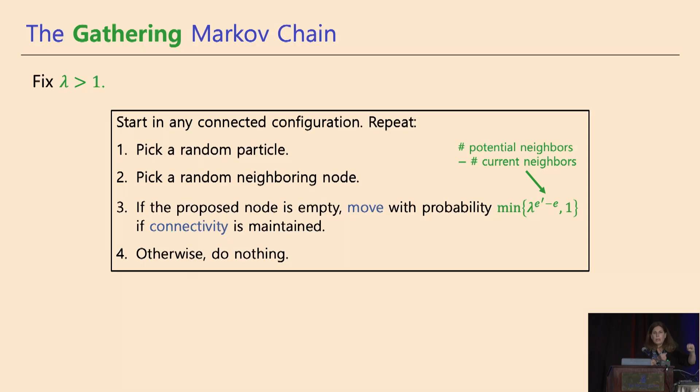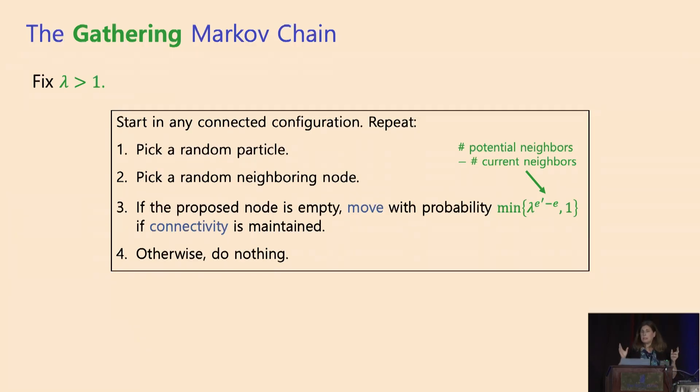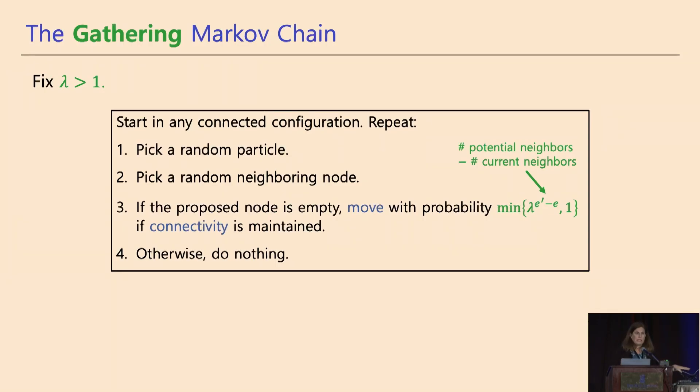It goes there with probability which is determined by some parameter lambda. So it goes there with probability lambda raised to the number of neighbors the ant would have in the new place minus the old place. Very simple, and it stays connected. So if it was going to disconnect, it rejects the move.